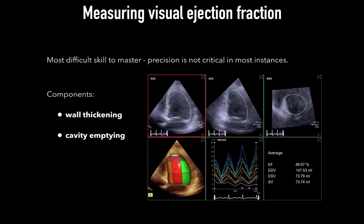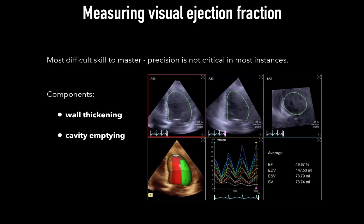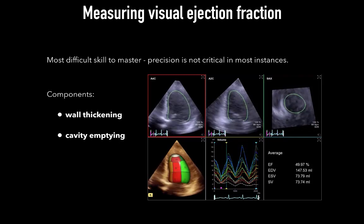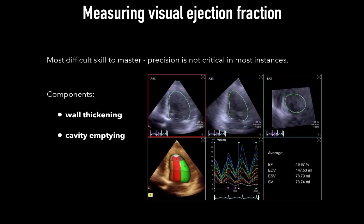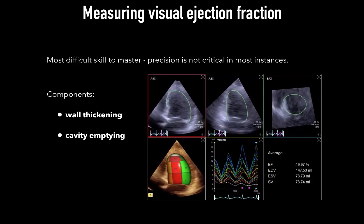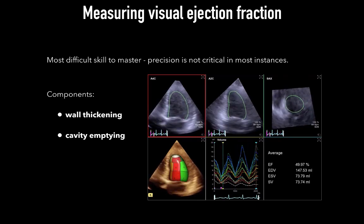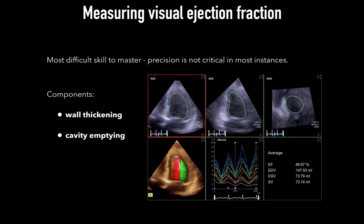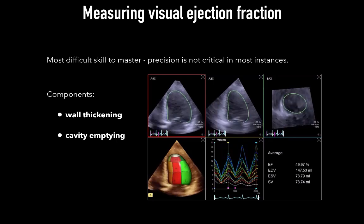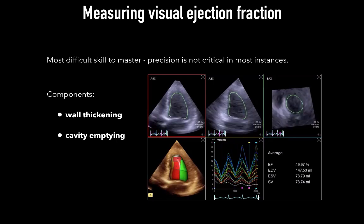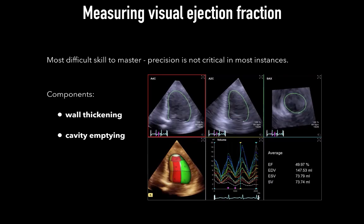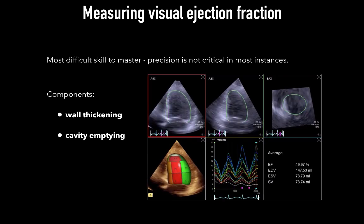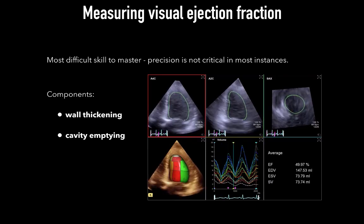Visual EF was one of the first methods used and is well validated against other quantitative measures in trained individuals. It's one of the earliest skills learned and latest to be mastered. However, for the purposes of our application, a precise estimate is not critical. Visual estimation relies on two major components: wall thickening and cavity emptying.